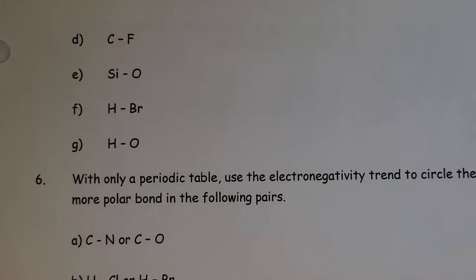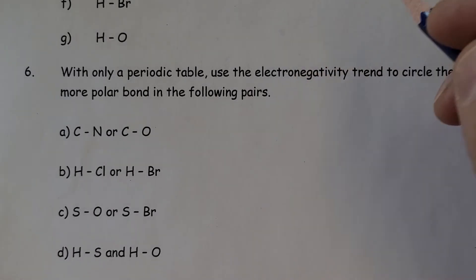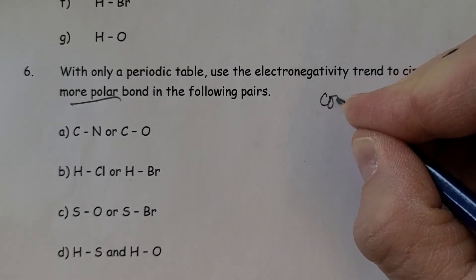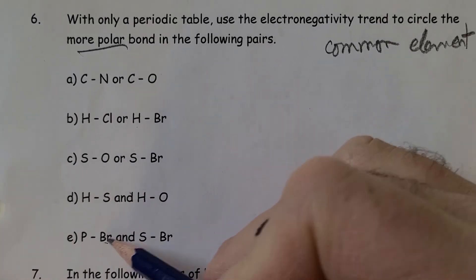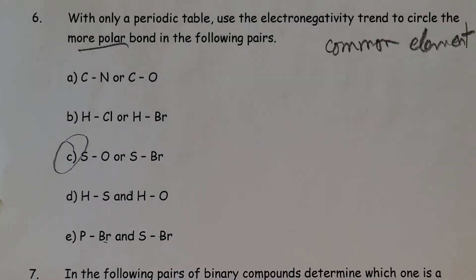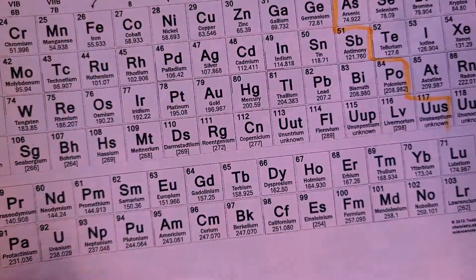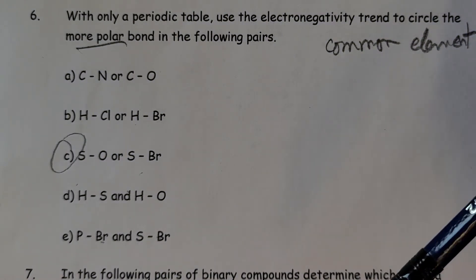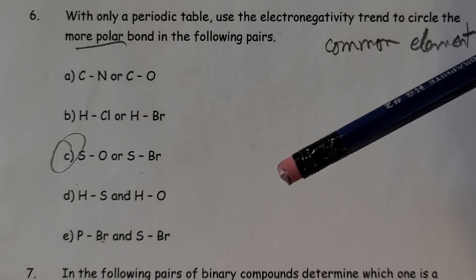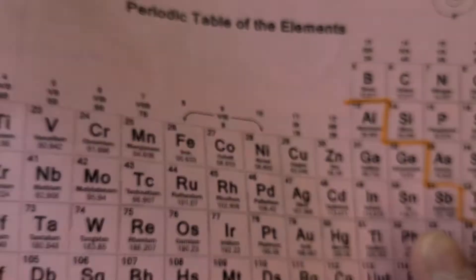Question 6 asks you to use electronegativity trends with only a periodic table to circle the more electronegative and more polar bond. Each pair has a common element. Let's look at SO versus SBr as an example.